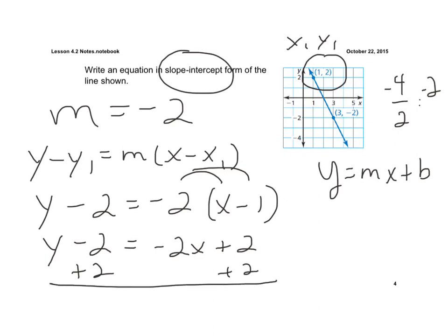And again, make sure you add it with the like terms. And my final answer is y is equal to a negative 2x plus 4. And now that's my answer in slope-intercept form.